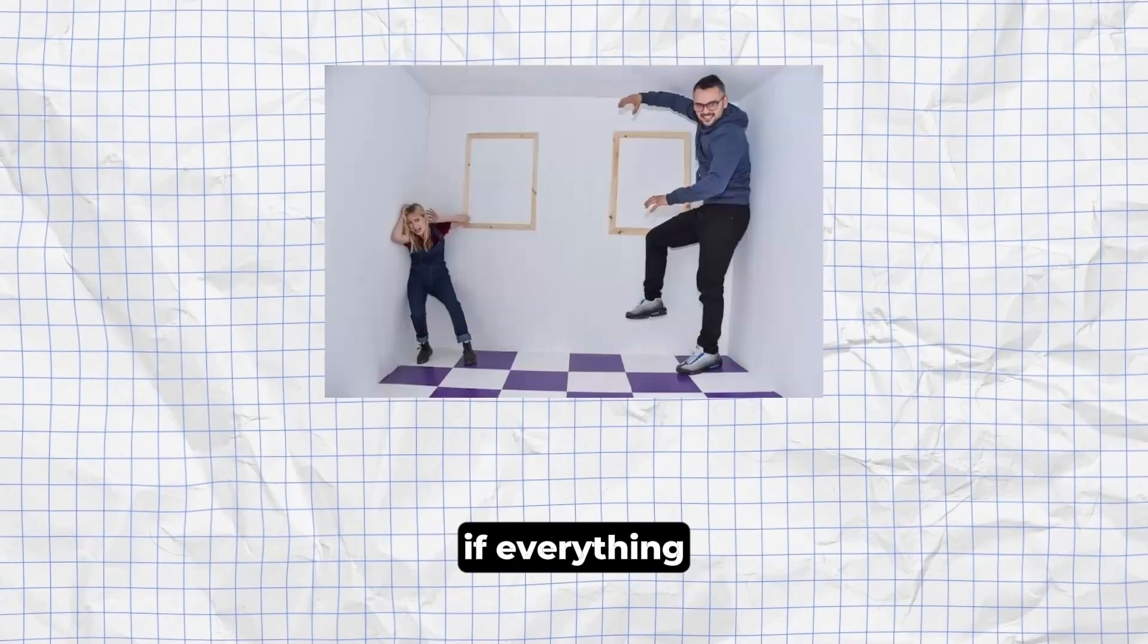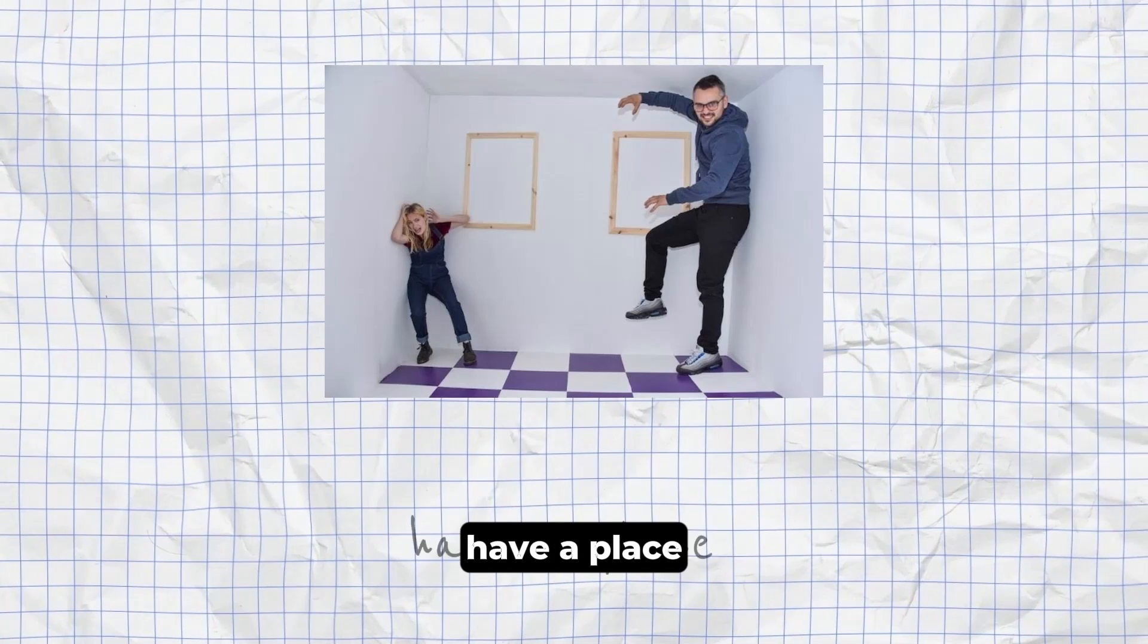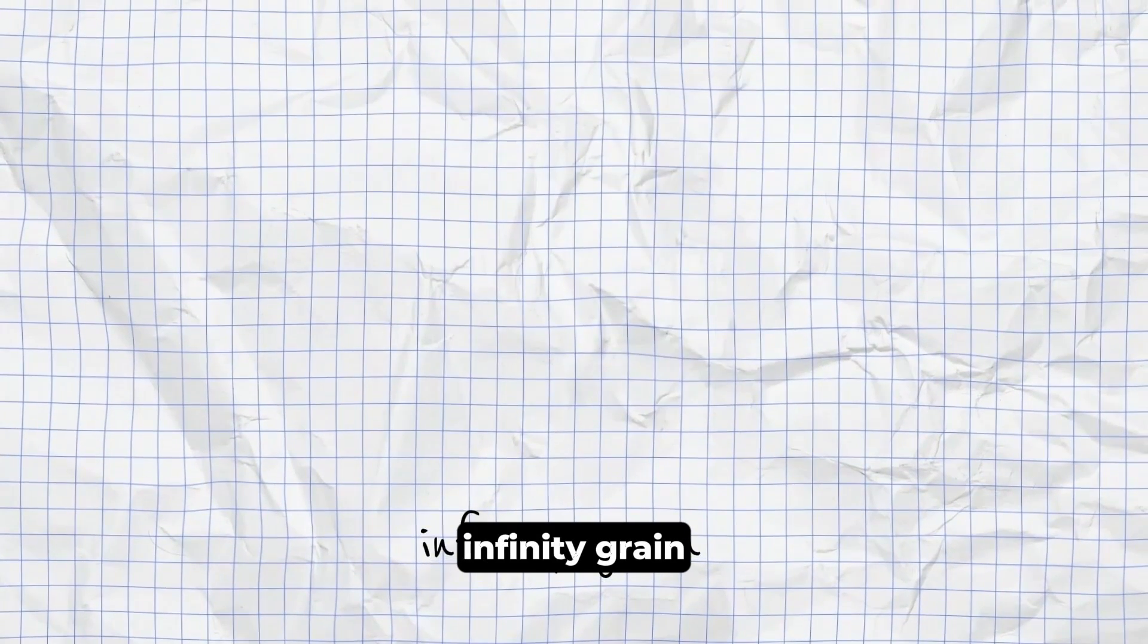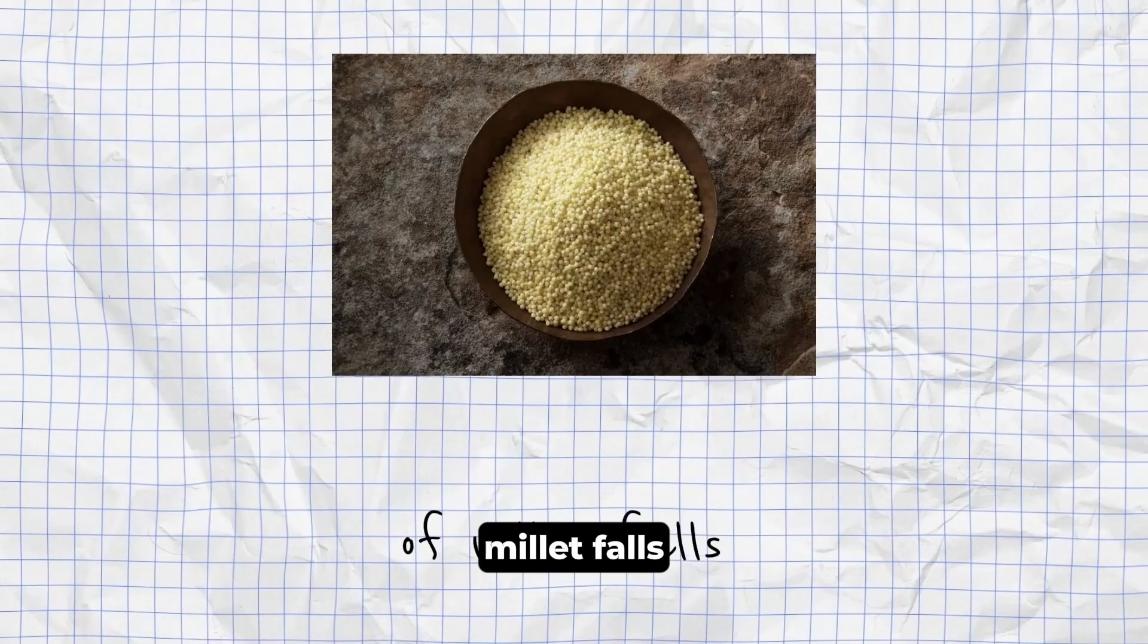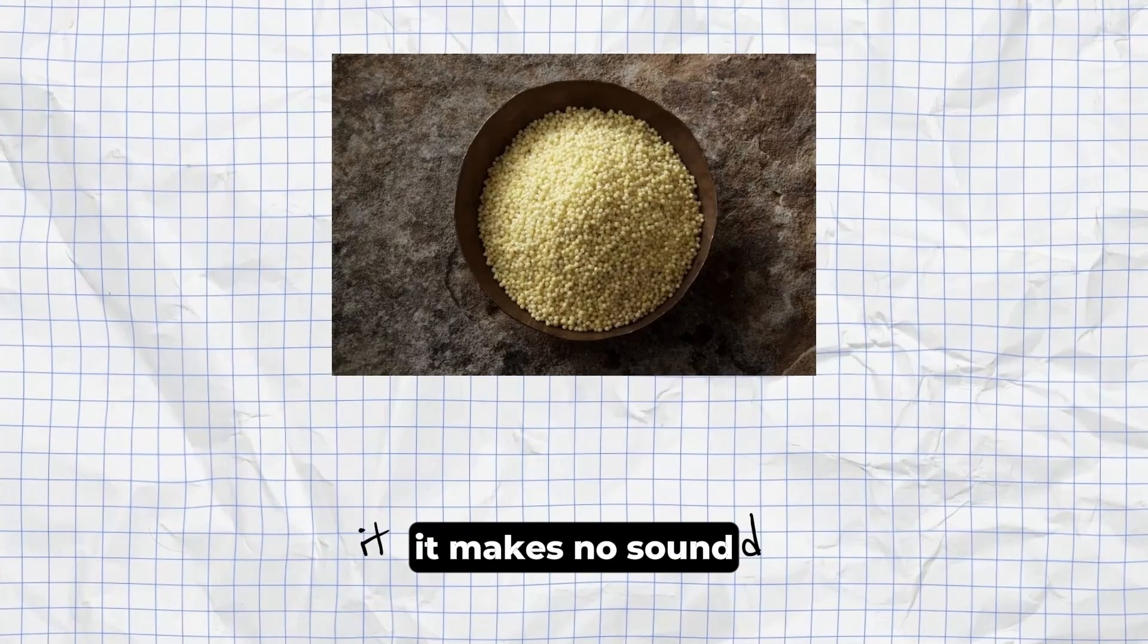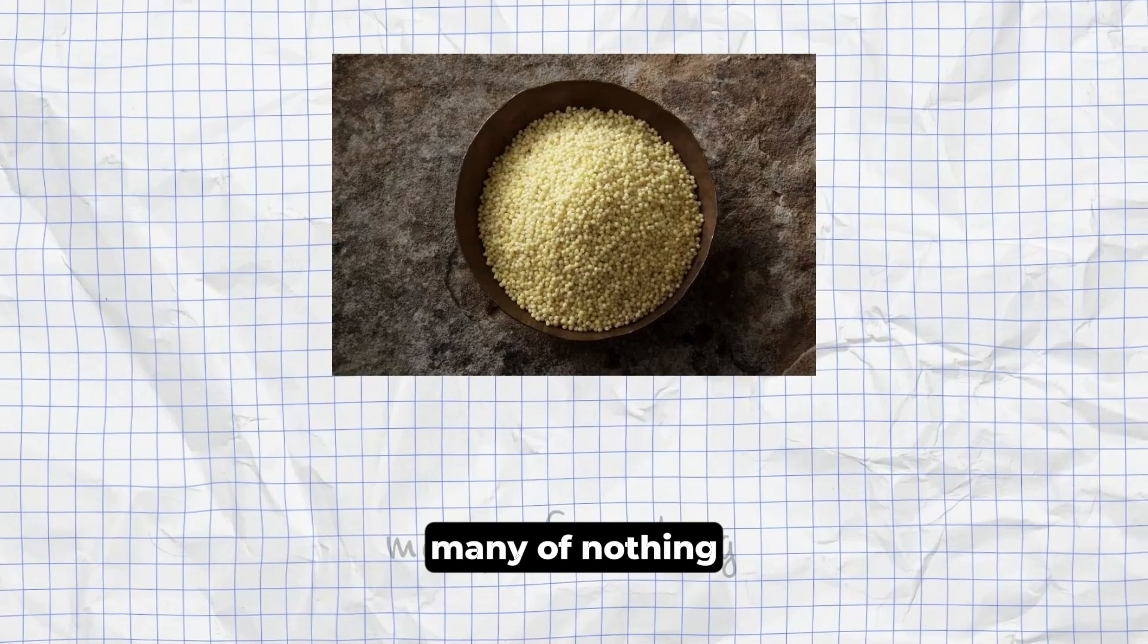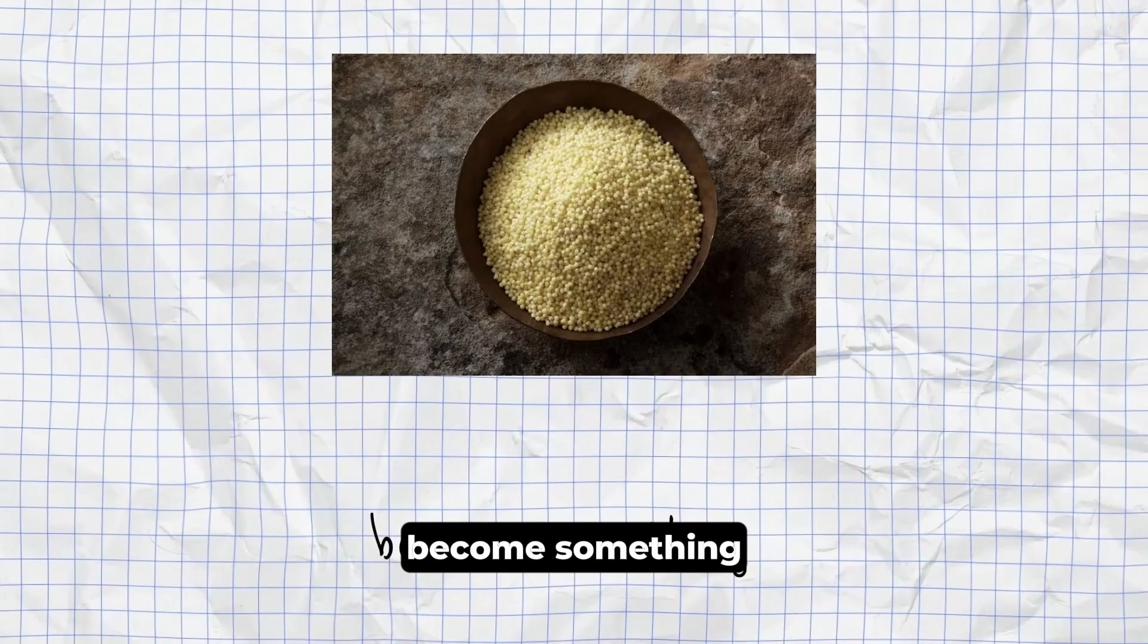Place Paradox. If everything that exists has a place, that place must have a place, and so on, to infinity. Grain of Millet Paradox. When a grain of millet falls, it makes no sound, but when thousands of grains fall, they do. Thus, many of nothing become something.